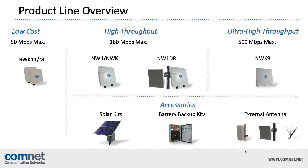We have the low-cost NWK11-M at up to 90 megabits of throughput. In the high-throughput category, we have the new Gen 3 NW1 series, which includes individual radios, kits, and the dual radio unit. For backhaul applications, we have the NWK9 at up to 500 megabits per second. In the accessories category, we have several options for external antenna, solar power kits, and industrial battery backup kits.